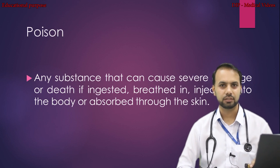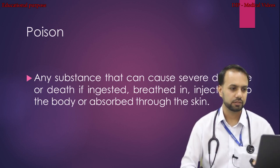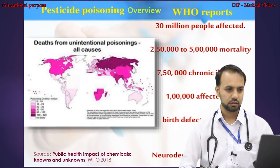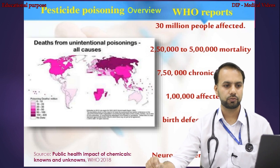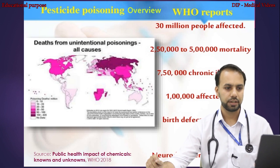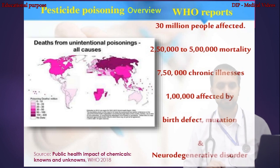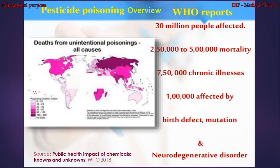What is a poison? Any substance that can cause severe damage or death if ingested, breathed in, injected, or absorbed through the skin. The WHO report from 2018 shows that 30 million people are affected by poison worldwide, with around 250,000 to 500,000 deaths per year. Around 750,000 chronic illnesses are related to poison, and 100,000 are affected by birth defects, mutation, and neurodegenerative disorders due to poisoning.